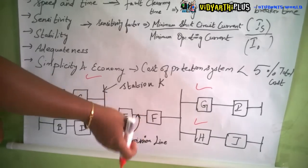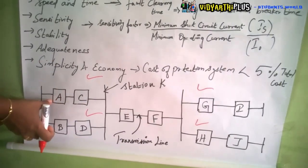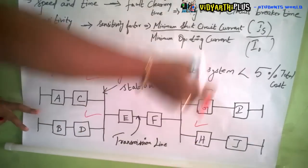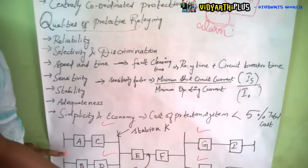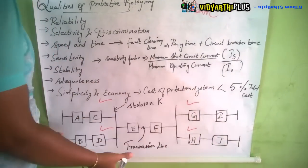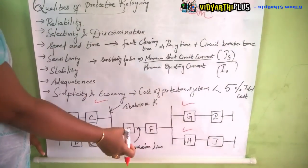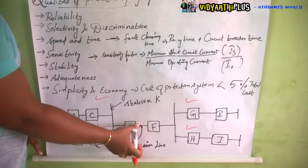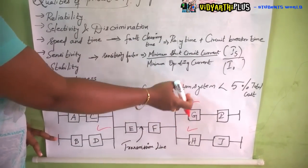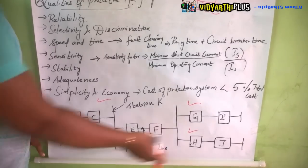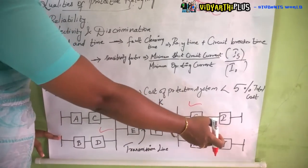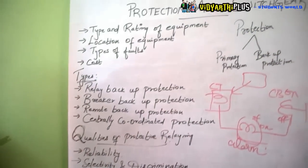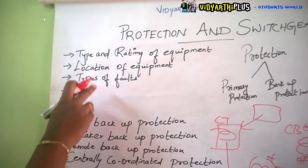If these primary relays go wrong at any case, the transmission line still has to be protected. So relays A, B, I, J will act — these are called the backup protection relays. The primary protection is called the first line of defense. When the first line of defense goes wrong, the secondary relay starts its operation.